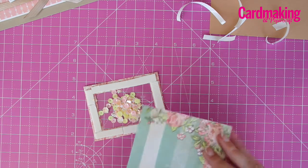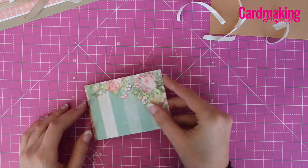Attach the other piece of paper to the back to seal your shaker panel.